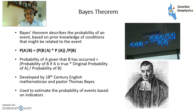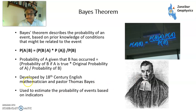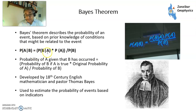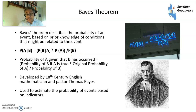This is Thomas Bayes, an 18th century English pastor, and he came up with this probability theorem. The probability of A given that B has happened is the probability of B given that A has happened, times the probability of A in the first place, divided by the probability of B in the first place. This has been used in very many fields.